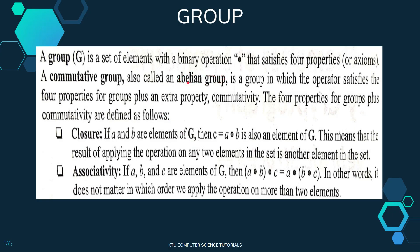A group is a set of elements with a binary operation. There are four properties. The first property is closure: if a and b are elements of the group, then C = a operation b is also an element of the same set G. That is the closure property — the result of the operation stays within the same set.